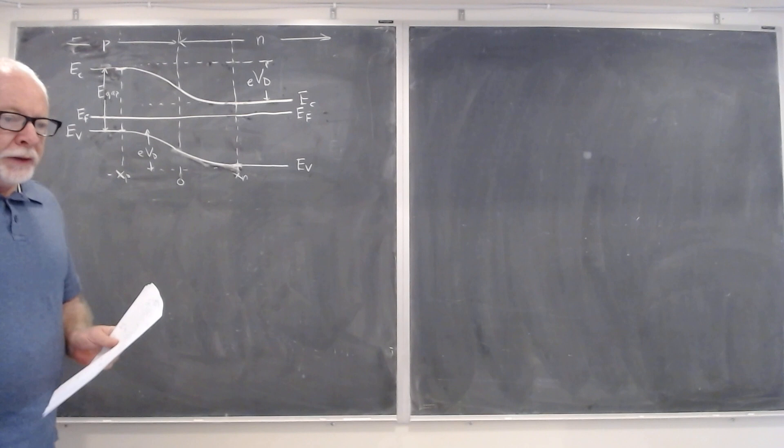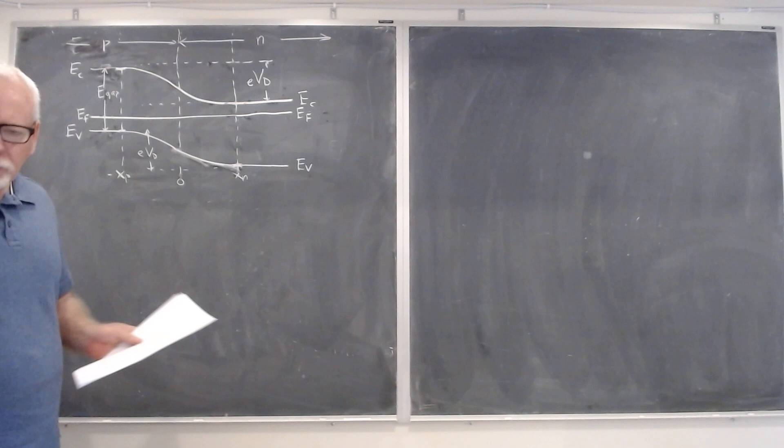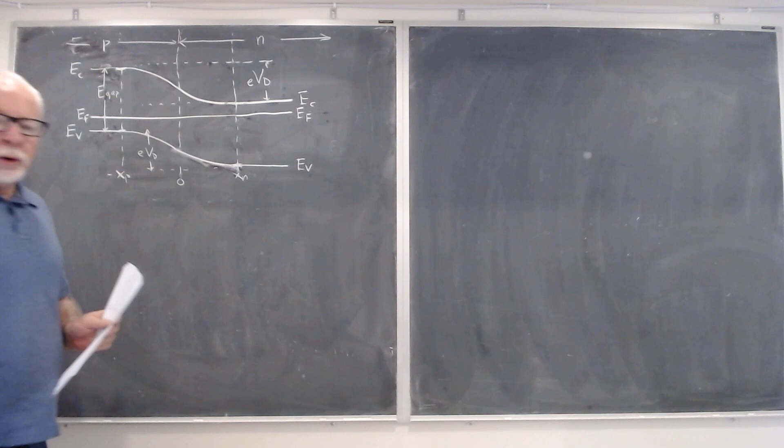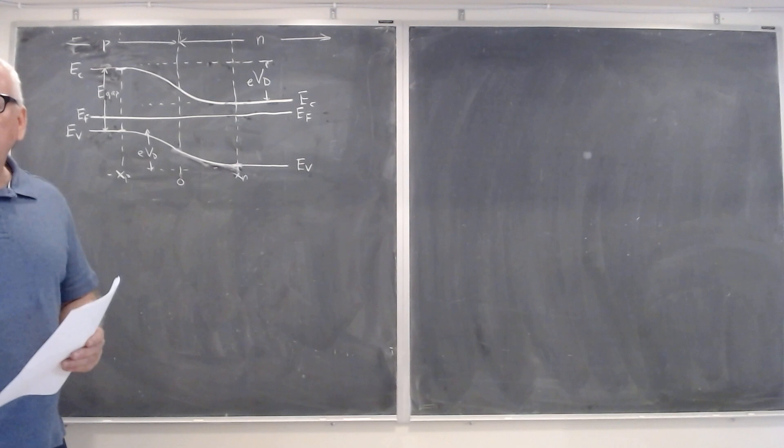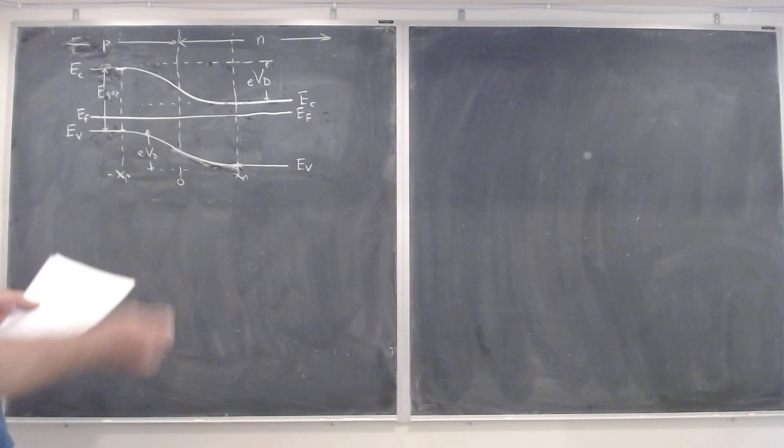Hi class. Last lecture we covered how a diode works and how it is at zero bias. Today we're going to cover what happens when you put a bias on it, going toward deriving the equation for the current versus voltage of a diode.